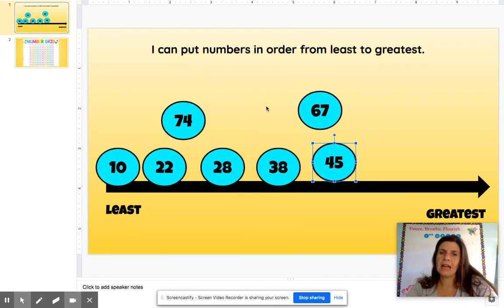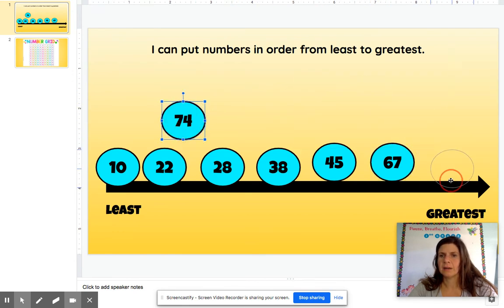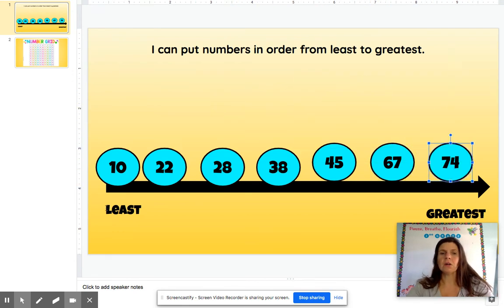Now I have two left. I'm going to take a peek right in the tens place. Six and seven. Six is less than seven. So 67 is less than 74. And then I'm going to move this guy over here. And now I have them in order from least to greatest.